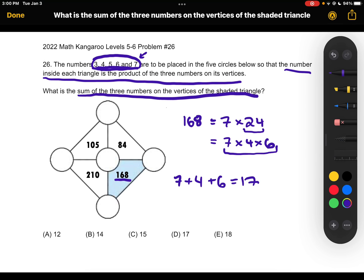And this way we solved the problem without ever really needing to figure out where each number is, like what circle has which number, because all we need to know is the sum of the three numbers that are on the vertices of the triangle with 168 in it and that is 17 which is answer choice D.